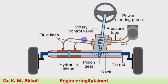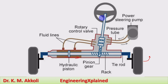If fluid is supplied to one end of the piston, the piston moves in that direction, and the fluid from the other end goes to the tank in a closed loop. If the piston is moving in this direction, the rack and pinion rotates and the wheel turns in this direction. If you turn the steering wheel in the other direction, the control valve supplies fluid to the other side, and the piston moves in the opposite direction due to pressure at the other end.